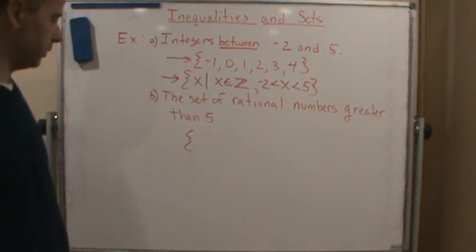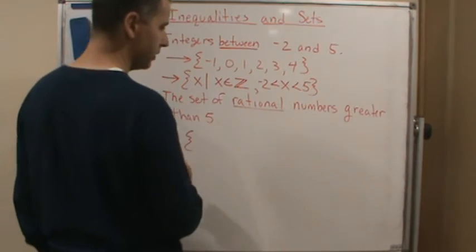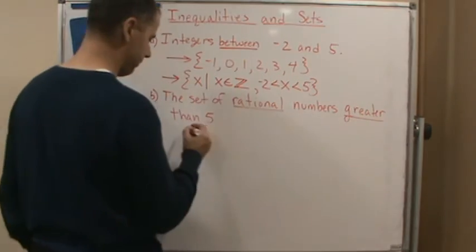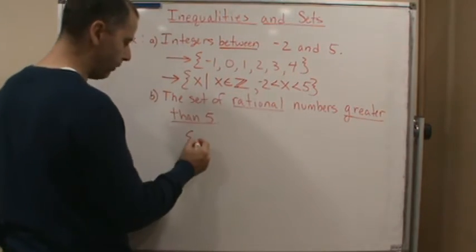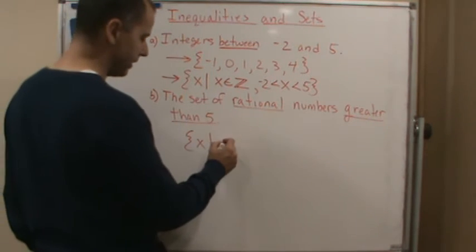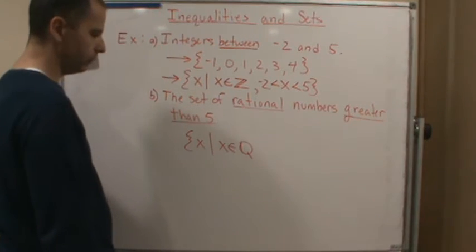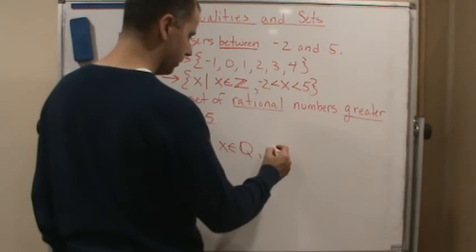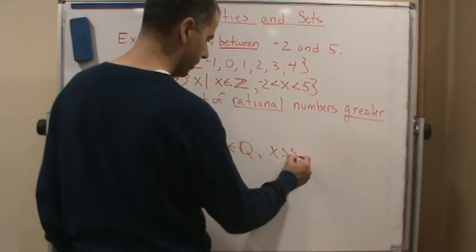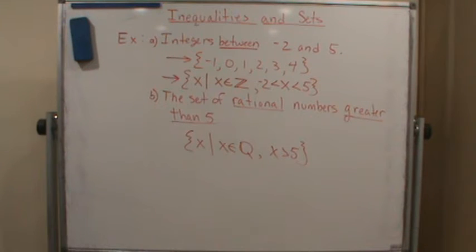So the easiest way, we're dealing with rational numbers greater than five. I want the set of all x such that x is an element of the rational numbers, and I want x to be greater than five. And I'm done.